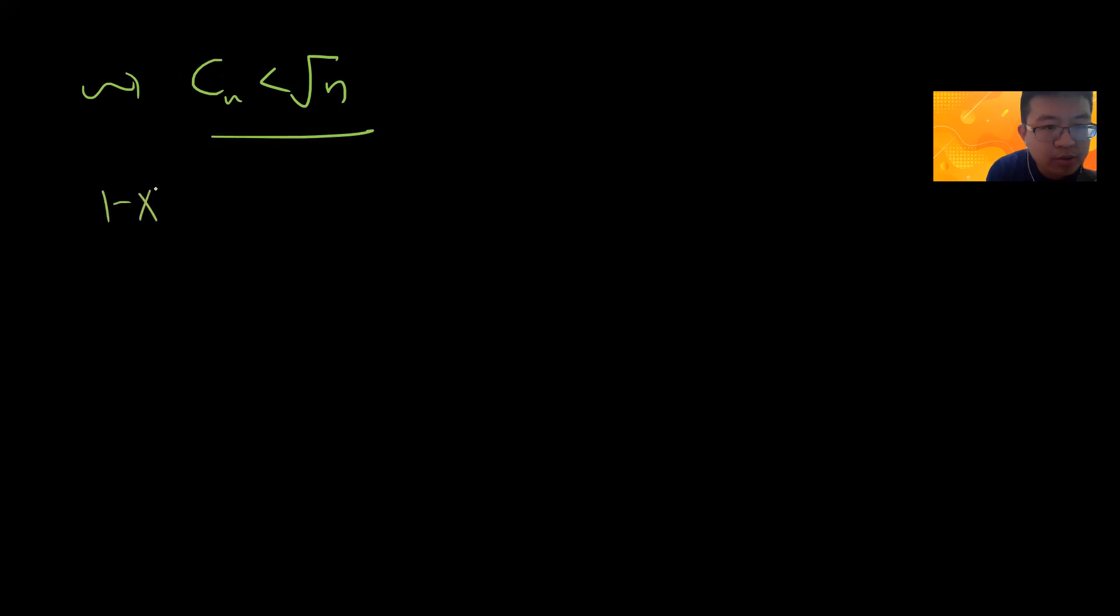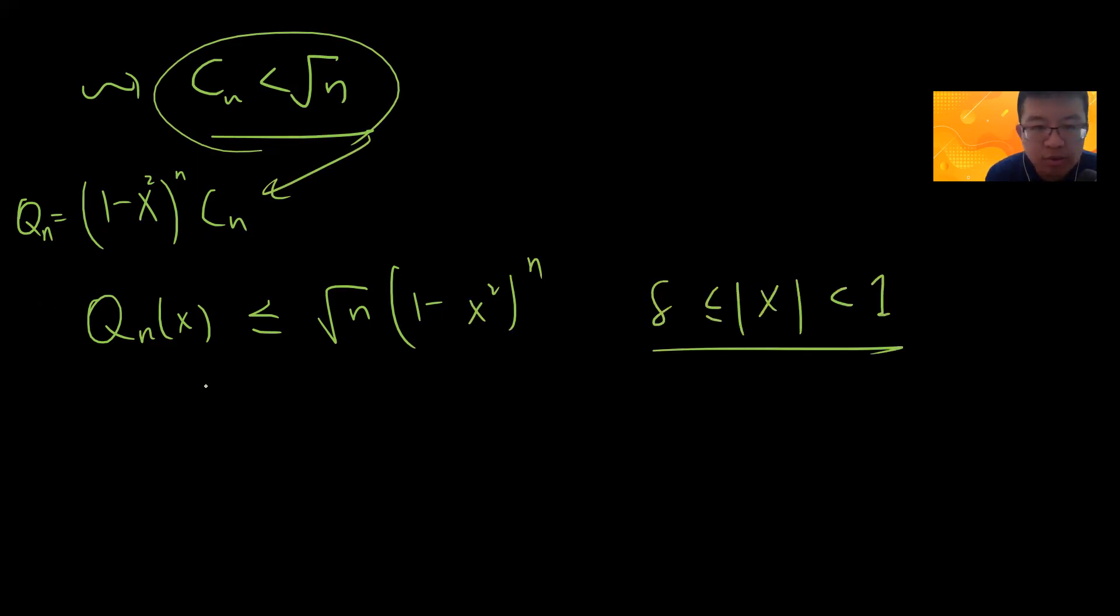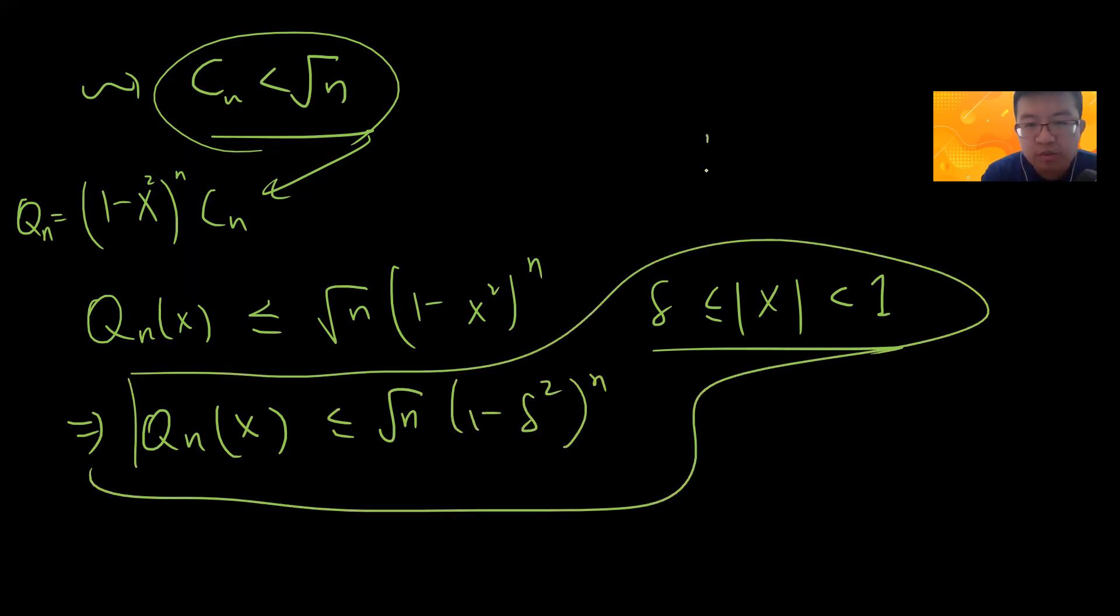By the previous result, I know that Q_n can be bounded. Notice that Q_n(x) can be bounded by √n times (1-x²)^n. And let's consider for this region, I can prove that Q_n(x) is less or equal to √n(1-δ²)^n. So delta is something greater than 0 and less than 1. This is what I will use in the next paragraph.